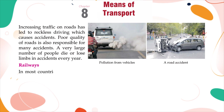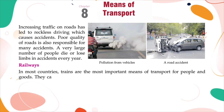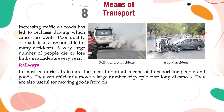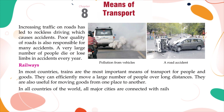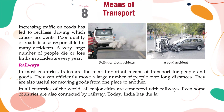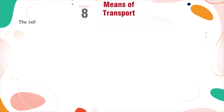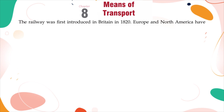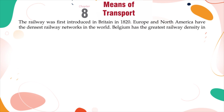Railways: In most countries, trains are the most important means of transport for people and goods. They can efficiently move a large number of people over long distances, and are also useful for moving goods. In all countries of the world, all major cities are connected with railways, and even some countries are connected by railway. India has the largest railway network in Asia and the fourth largest in the world. The railway was first introduced in Britain in 1820. Europe and North America have the densest railway networks in the world. Belgium has the greatest railway density in Europe.